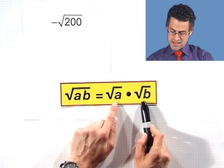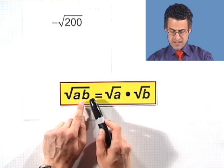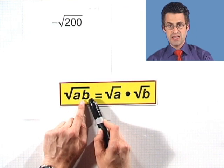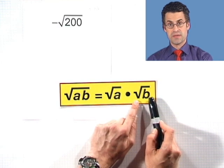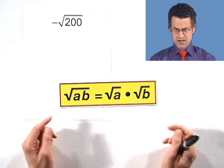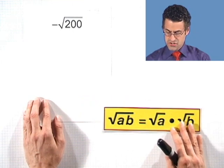And so in this case, what I see here is that if I have square root of something times something else, it actually equals the square root of the something times the square root of the something else. Why is that handy here? Well, let's take a look and see if we can factor 200.